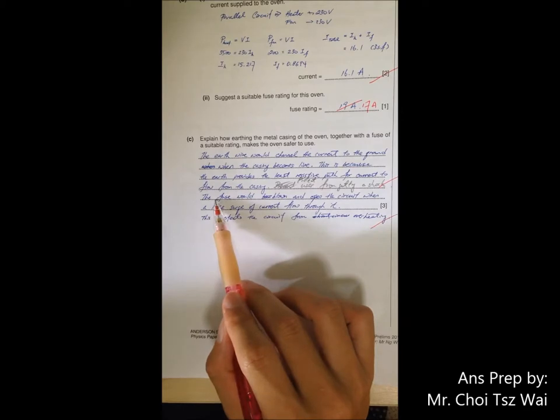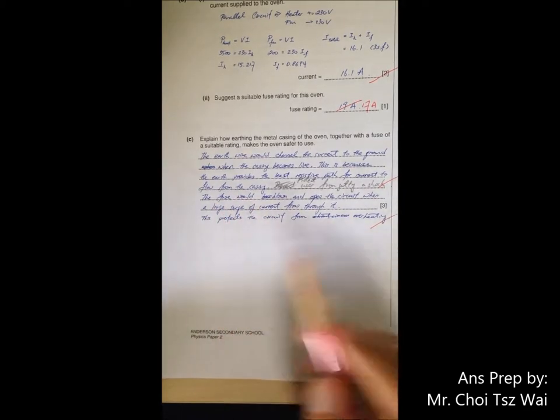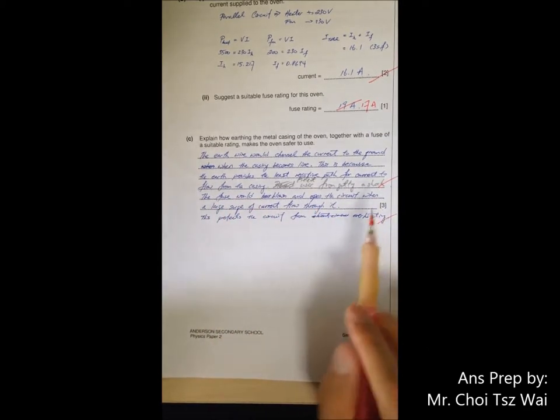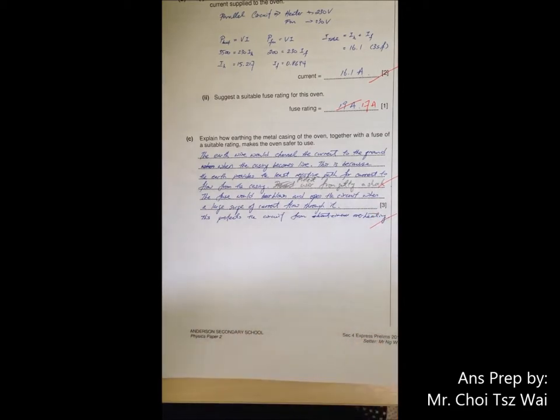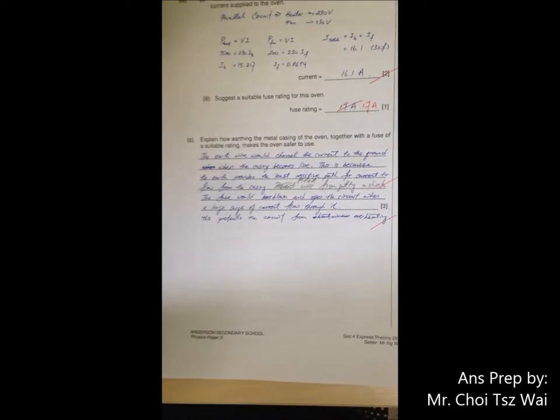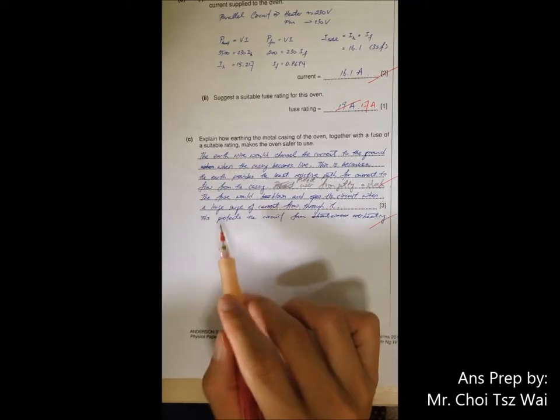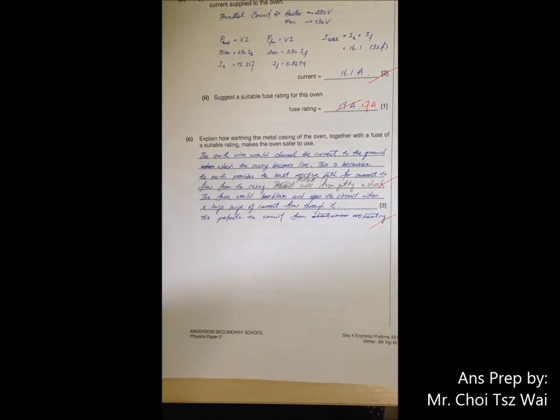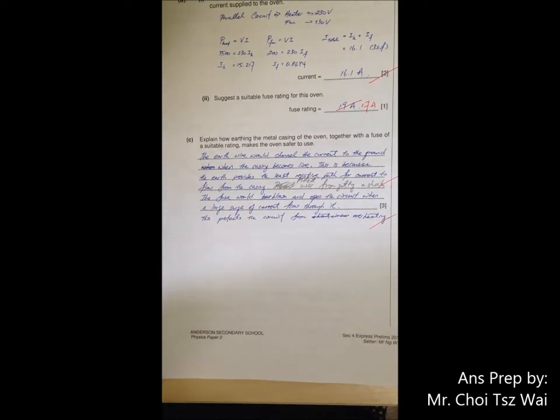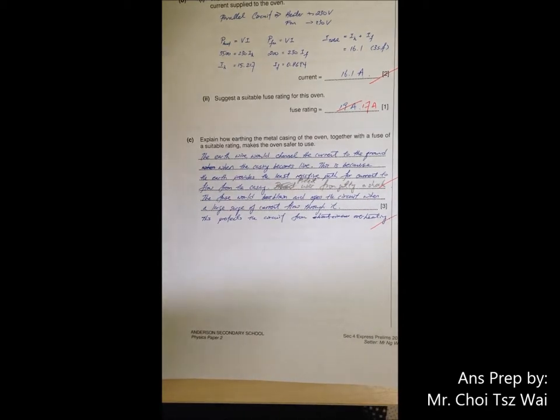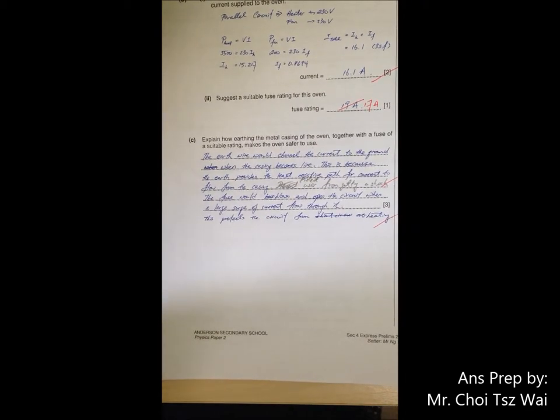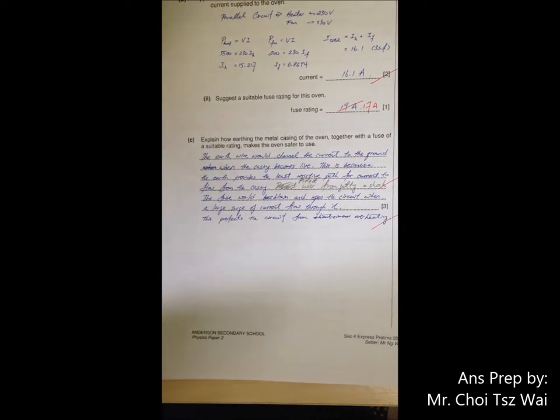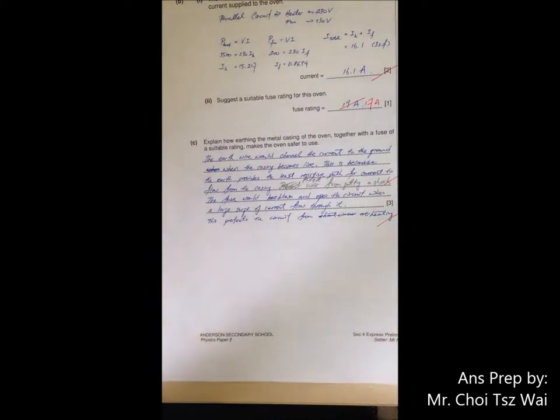Next, the fuse, how does it work? The fuse will blow and open the circuit when the large surge of current flows through it. So how does it impact the user? So therefore, it protects the circuit from overheating. That's it. This is an impact to the user. It prevents overheating and cause a fire.